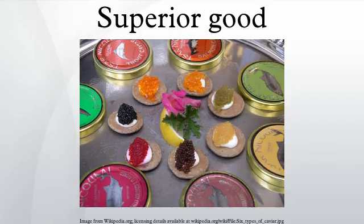Consumption of all normal goods increases as income increases. For example, if income increases by 50%, then consumption will increase. A superior good is a normal good for which the proportional consumption increase exceeds the proportional income increase. So, if income increases by 50%, then consumption of a superior good will increase by more than 50%. In economics terminology, all goods with an income elasticity of demand greater than zero are normal, but only this subset having income elasticity of demand greater than one are superior.